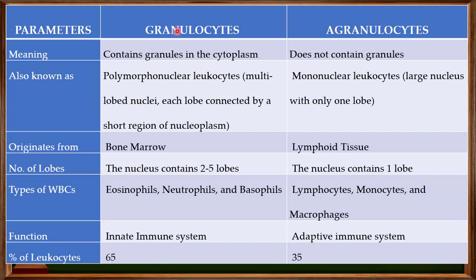Regarding the origin, granulocytes originate from the bone marrow, while agranulocytes originate from the lymphoid tissue. The nucleus of granulocytes may contain two to five lobes, whereas there is only a single lobe in the nucleus of agranulocytes.